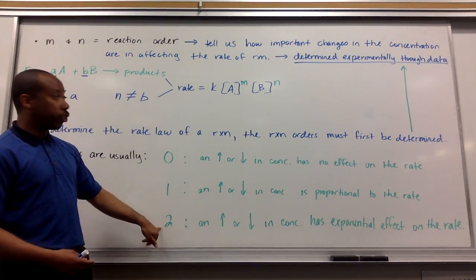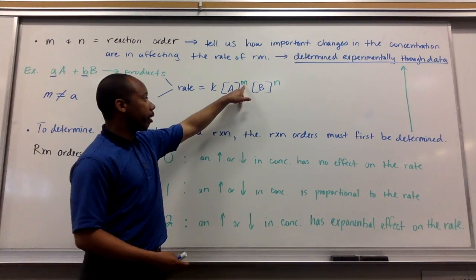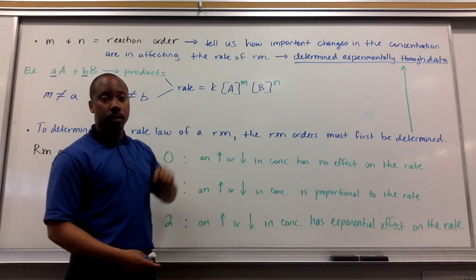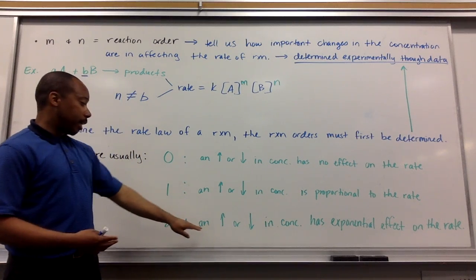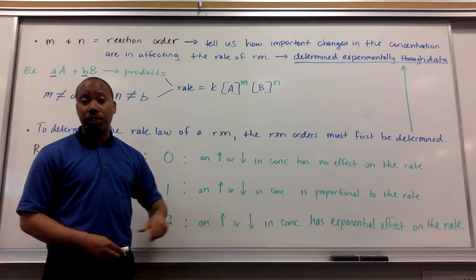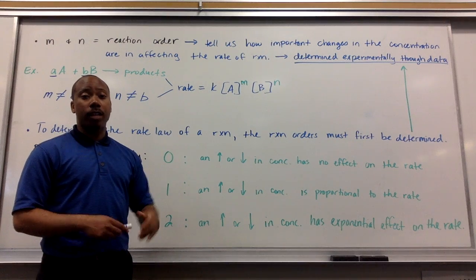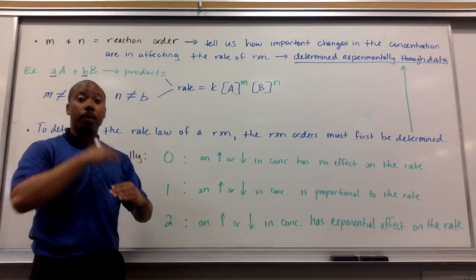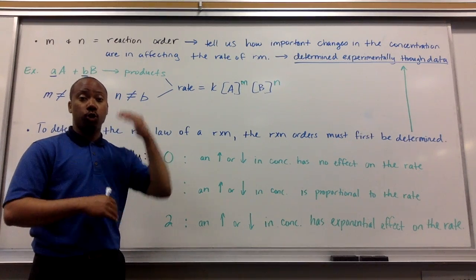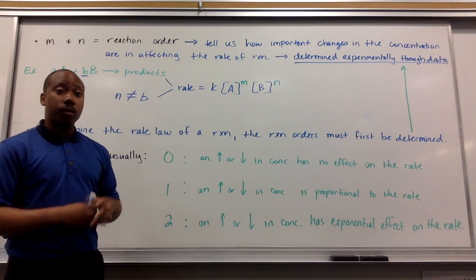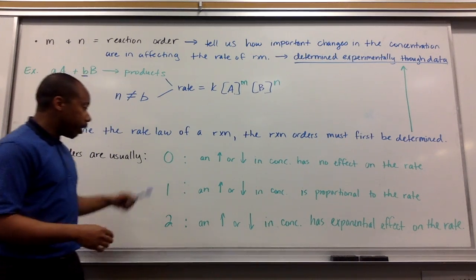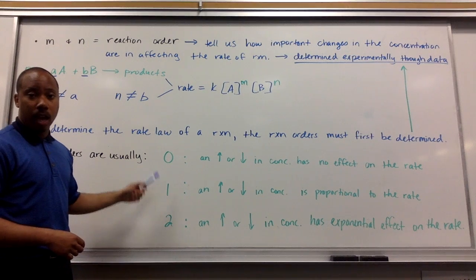If my reaction order is 2, if I have a 2 here, so A to the second power, mathematically, you can probably figure it out already. That means that an increase or decrease in the concentration of A has an exponential effect on the rate. If I double A, the rate will be quadrupled. It's an exponential effect. That's what reaction orders are. And here are the reaction orders you're going to come into contact with.